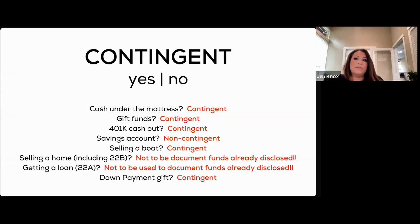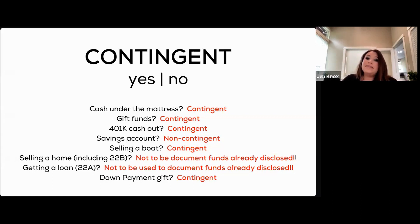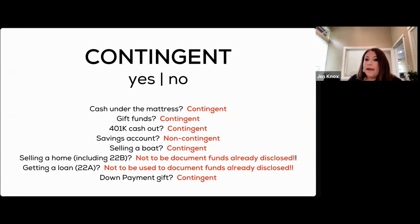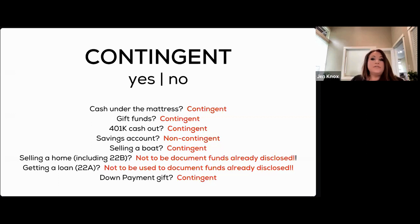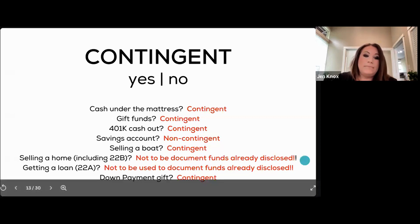Why not disclose a loan on both the 22EF and the 22A? There will be a contradiction in protections. The 22A is a financing contingency and the 22EF is a disclosure of funds. In the event of a financing failure, there would be no clear path to who retains the earnest money — one form says the buyer is waiving that right and the other says they're retaining it. So make sure you are not dual-disclosing the same monies.